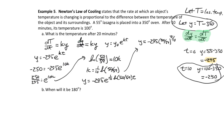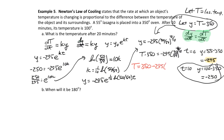Working through the calculation, we end up with Y equals negative 295 times (50/59) to the t/10. Since Y equals T minus 350, substituting back: T minus 350 equals negative 295 times (50/59) to the t/10. Adding 350 to both sides: T equals 350 minus 295 times (50/59) to the t/10.